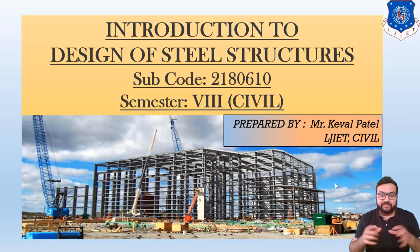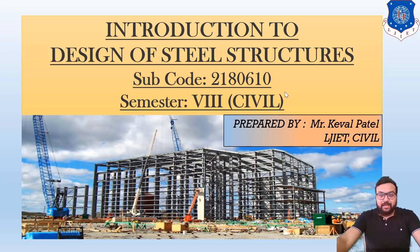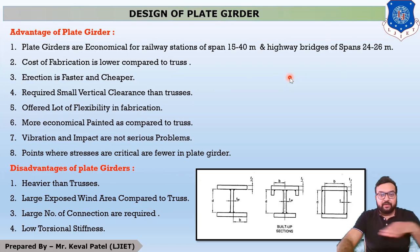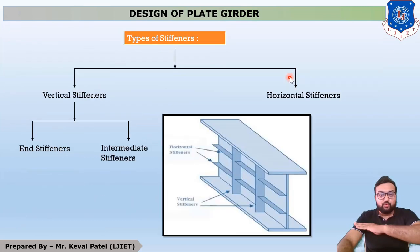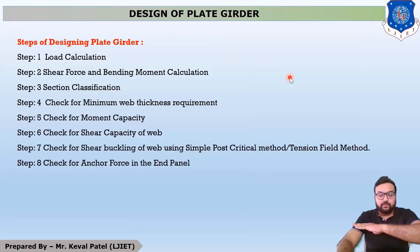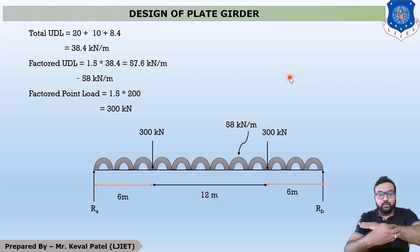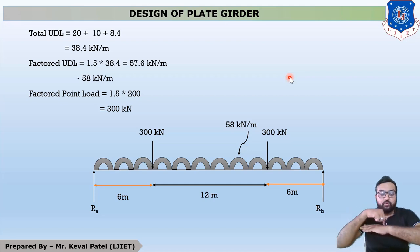In today's session, we are designing our plate girder section which resists maximum shear force and maximum bending moment. In the last lecture, we found the maximum shear force. The span of the plate girder is 24 meters, subjected to a UDL of 58 kN per meter including self weight, and 2 point loads at 6 meters from both ends.